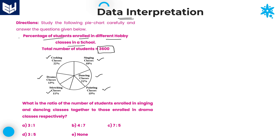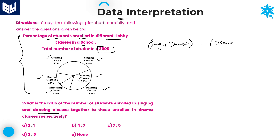The first question asks: what is the ratio of the number of students enrolled in singing and dancing together to those enrolled in drama classes? First, look at the percentages — singing is 18%, dancing is 21%, and drama is 13%.